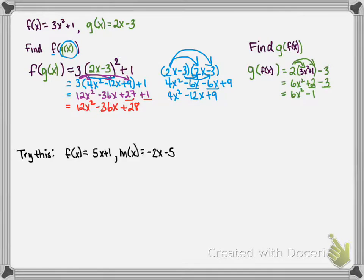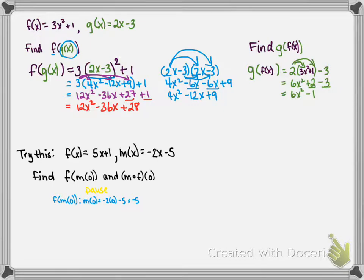Try this: if f of x equals 5x plus 1 and m of x equals negative 2x minus 5, find f of m of 0 and m of f of 0. For f of m of 0, we first find m of 0: negative 2 times 0 minus 5 equals negative 5. Now we find f of negative 5: 5 times negative 5 plus 1, which equals negative 24.